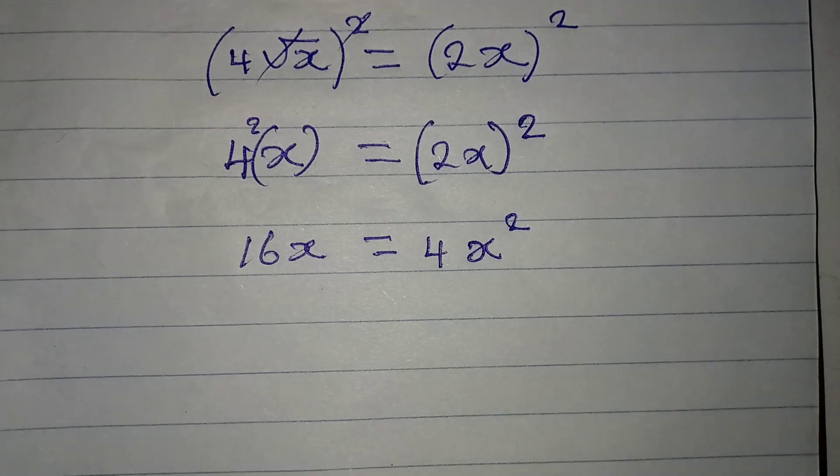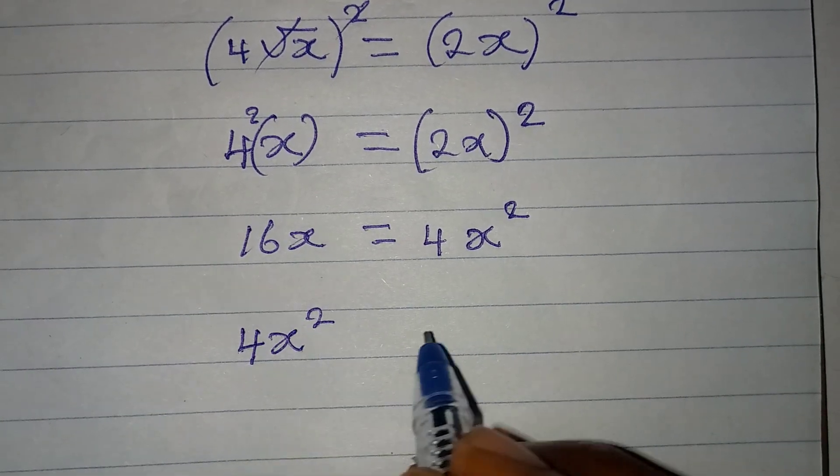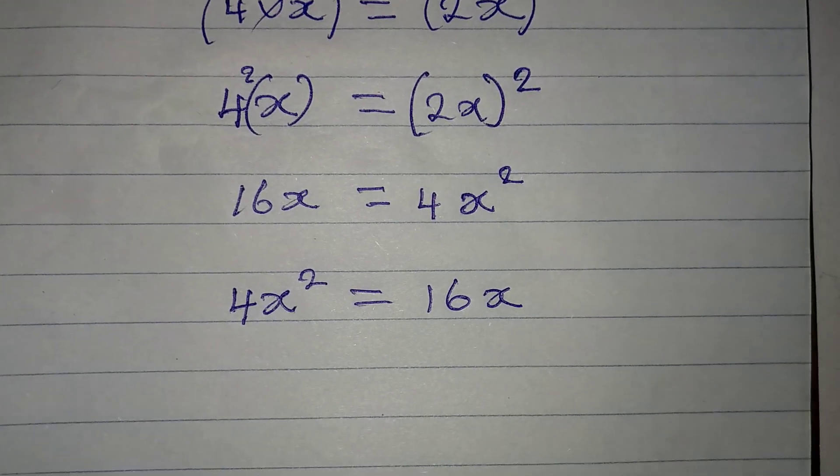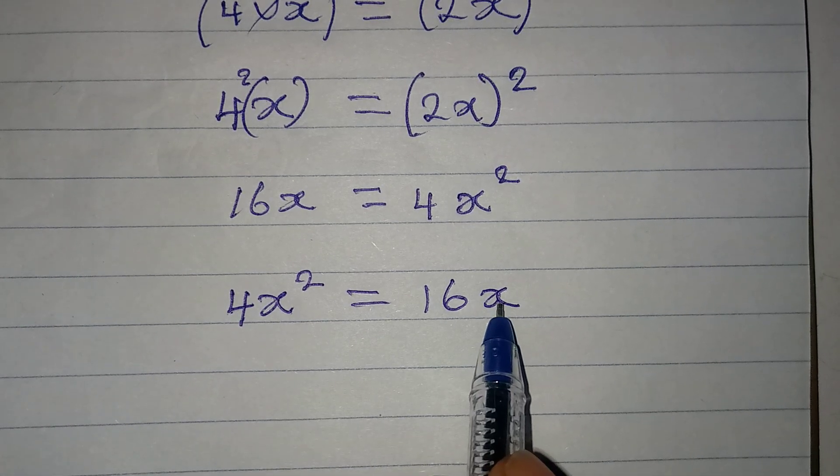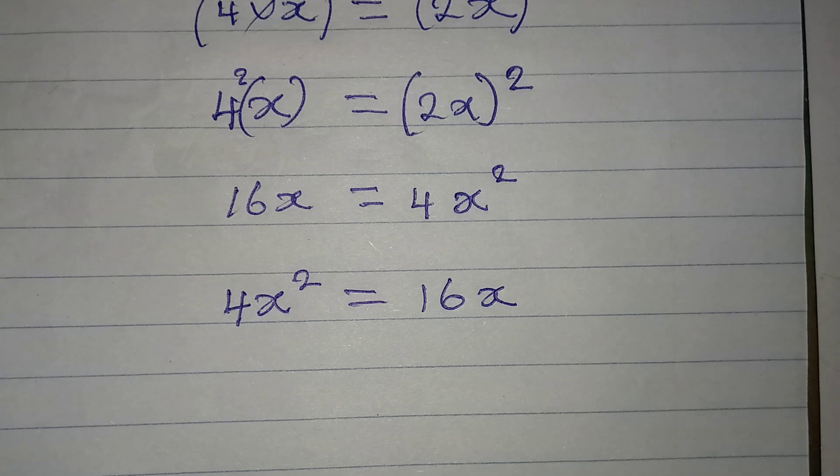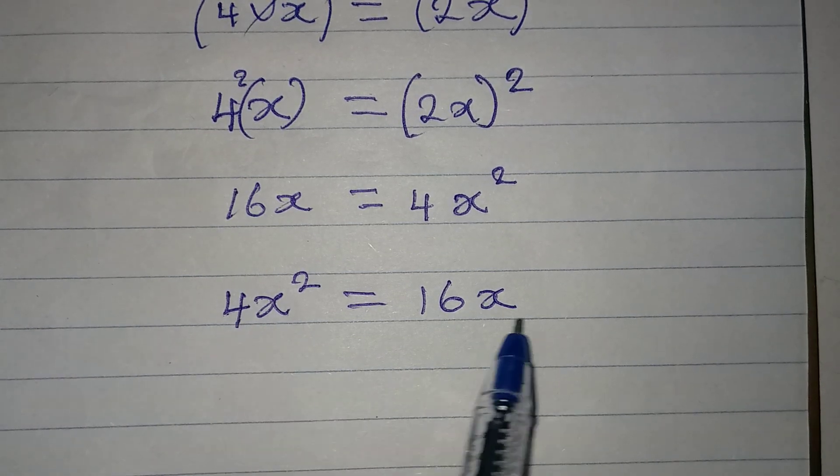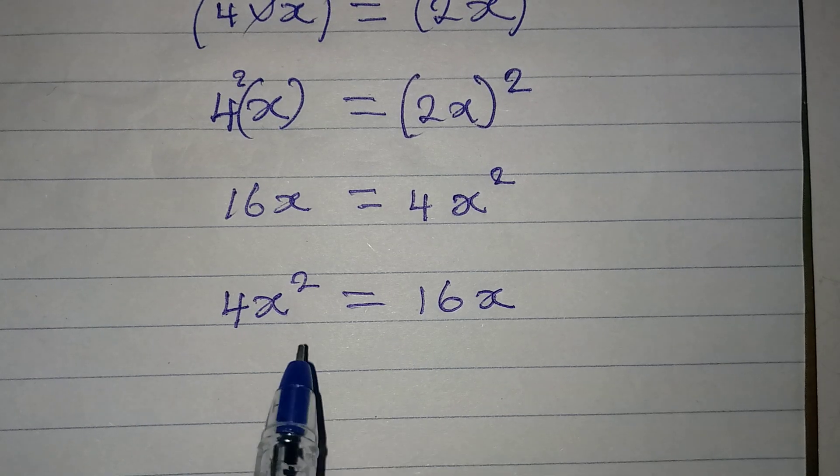Now, you can arrange this again to get 4x squared to be equal to 16x. Now, somebody will tell you that you can cancel 1x and cancel this. But then, you will be wrong because you're going to have just one solution. This is a quadratic equation and as such, we should have three solutions, right?